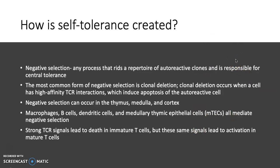Negative selection can occur in the thymus medulla and cortex, but you would typically see immature T-cells go into the thymus to become mature T-cells. Macrophages, B-cells, dendritic cells, and medullary thymic epithelial cells all mediate negative selection — any of these cells can select T-cells to undergo apoptosis.